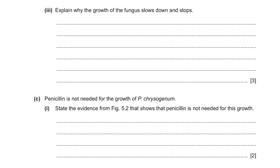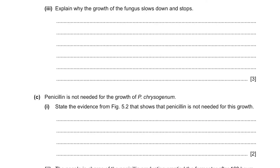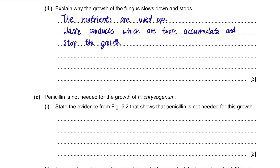Part 3: explain why the growth of the fungus slows down and stops. The fungus mass increases from the beginning but slowly plateaus and stops. First, all the nutrients may have been used up — unless we constantly provide necessary substances, the reaction will end. Also, waste products produced may be toxic to the fungus or enzymes. Once these build up, it will stop growth. Another possibility is that penicillin could inhibit fungal growth, or the population has reached its carrying capacity, not allowing more growth.